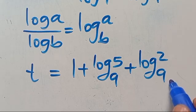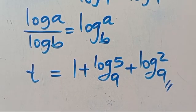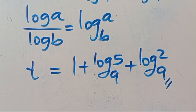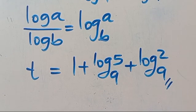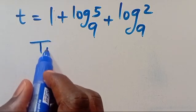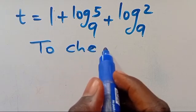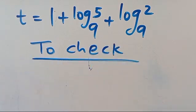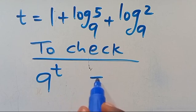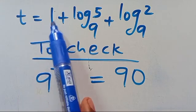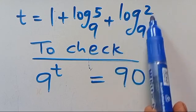So this is the final answer for the value of t. If you find this video interesting, don't forget to share, like, comment and subscribe to our YouTube channel for more master tutorial videos. Now let's check: we have 9 to the power of t equals 9t, where t equals 1 plus log 5 in base 9 plus log 2 in base 9.